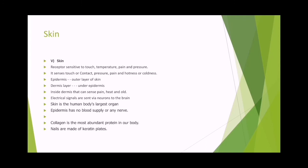There are two major layers of skin. Number one is the epidermis — the outer layer of skin. The inner layer is the dermis, and there is also a sub-layer called the hypodermis. Inside the dermis are receptors that can sense pain, heat and cold. Electrical signals are sent via neurons to the brain. An interesting point: epidermis has no blood supply or any nerve — epidermis کے اندر کوئی blood supply نہیں ہوتی اور نہ ہی کوئی nerve۔